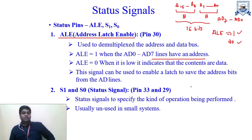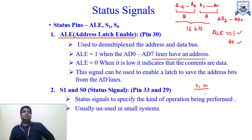Now we have S1 and S0. S1 and S0 are basically used to identify which operation the microprocessor wants to perform — or we can say which operation the instruction tells the microprocessor to perform — that is read or write processing. If we want to identify that a read operation or write operation is performed, we generally use these two pins, S1 and S0.